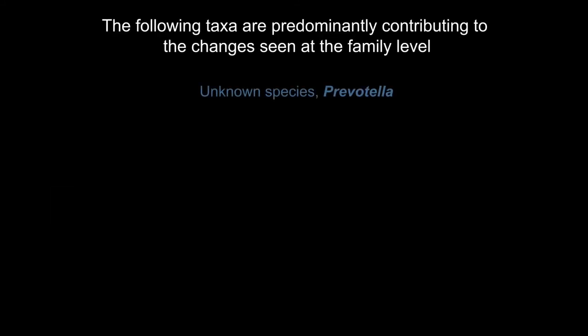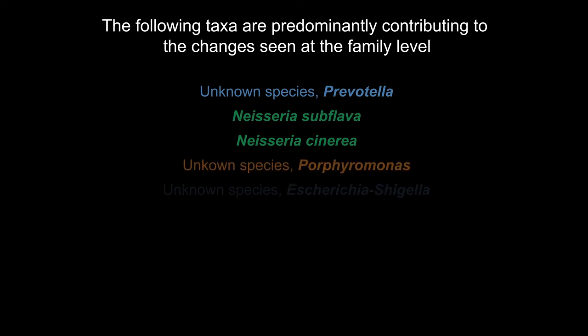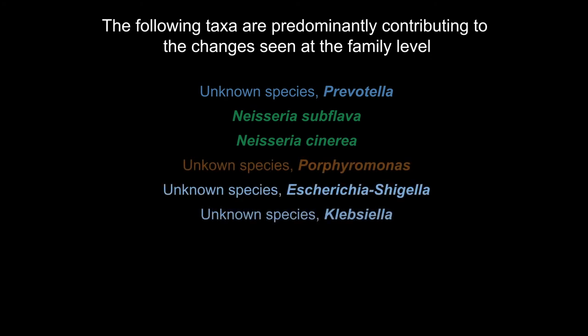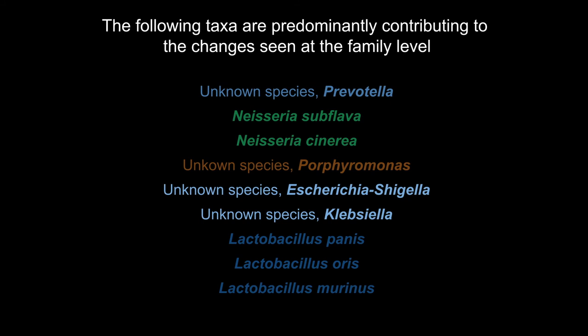The following taxa are predominantly contributing to the changes seen at the family level: an unknown species of Prevotella, Neisseria subflava, Neisseria sicca, an unknown species of Porphyromonas, an unknown species of Escherichia-Shigella, an unknown species of Klebsiella, Lactobacillus panis, and Lactobacillus murinus.